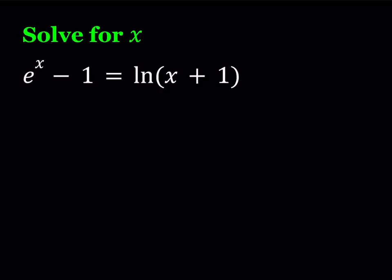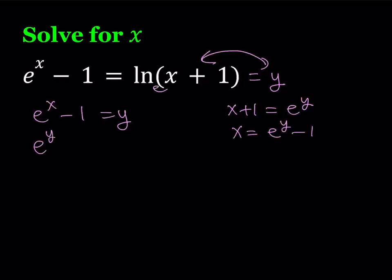I'm going to go ahead and call this y. So from here we get the following equations. First of all, the first one gives us e to the power x minus 1 equals y. And let's go ahead and work on the second equation a little bit. If you raise e to the power of both sides, you get x plus 1 is equal to e to the power y. And from here we can basically say that x can be written as e to the power y minus 1, or I can write this as e to the power y minus 1 equals x.